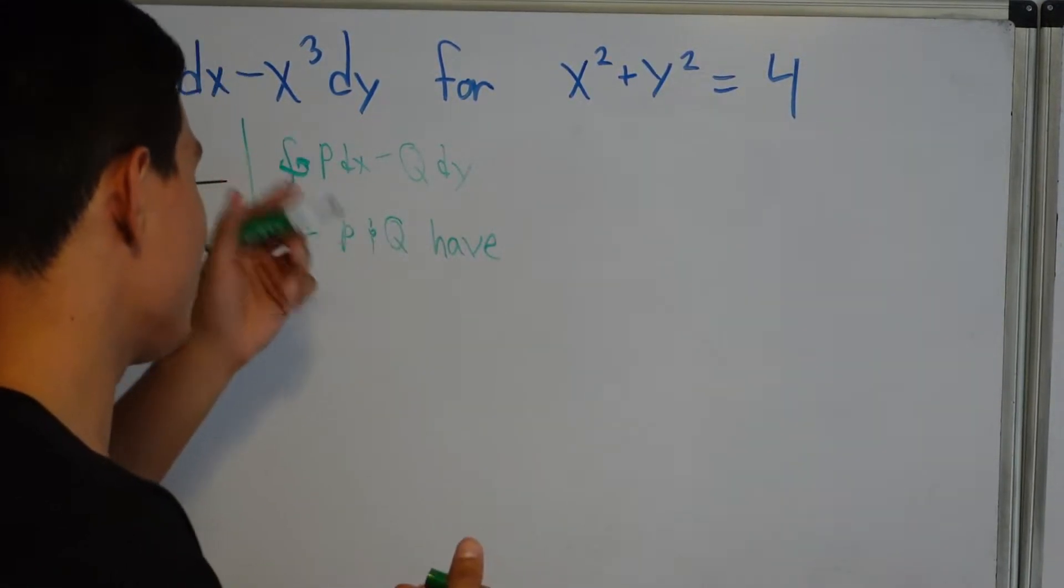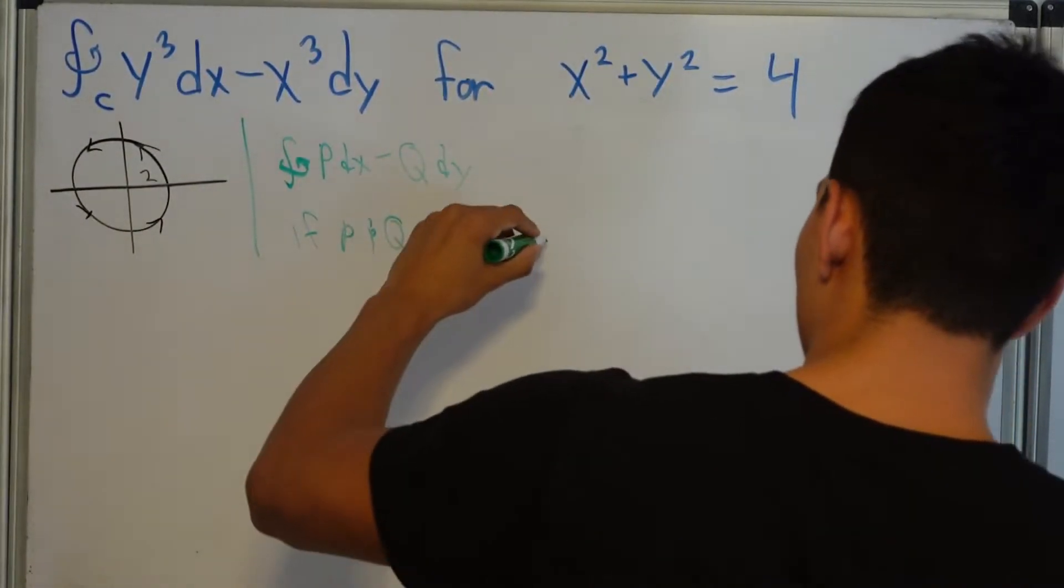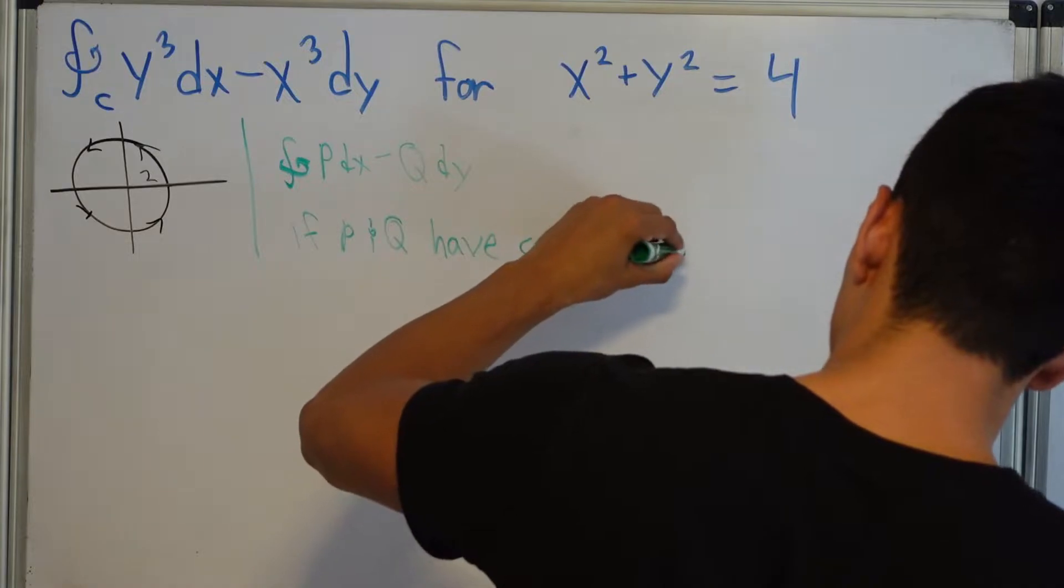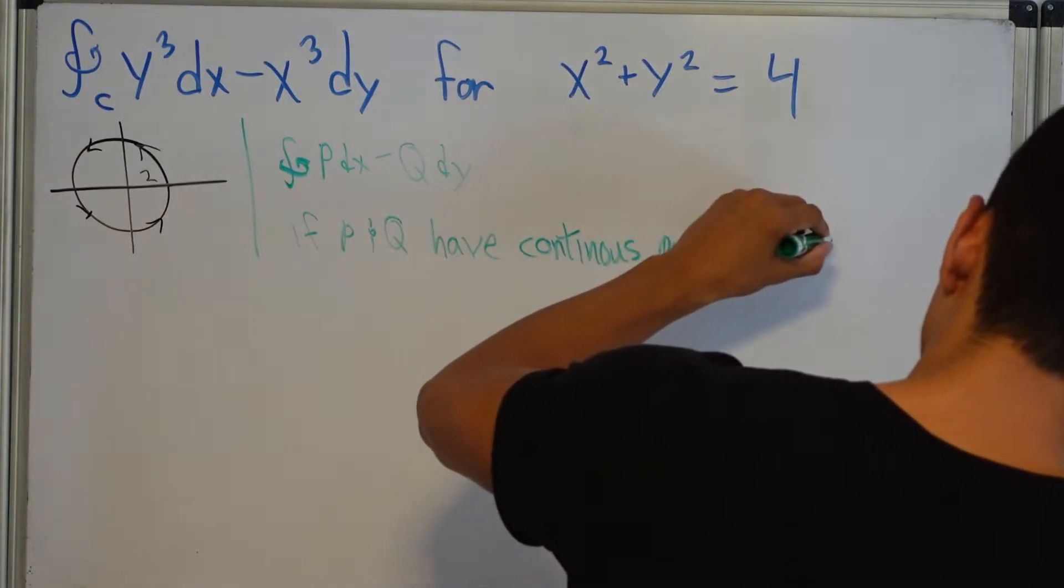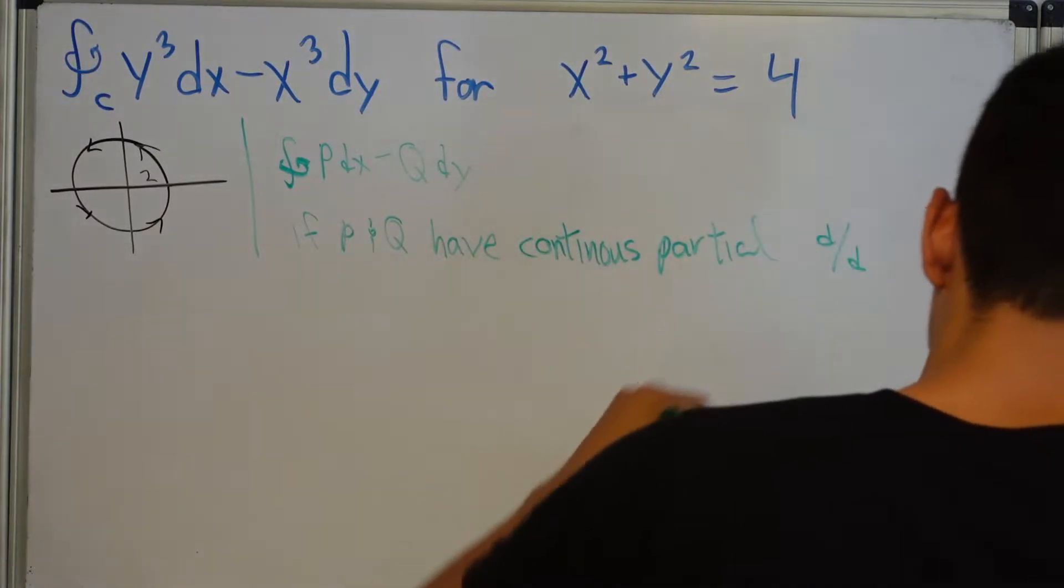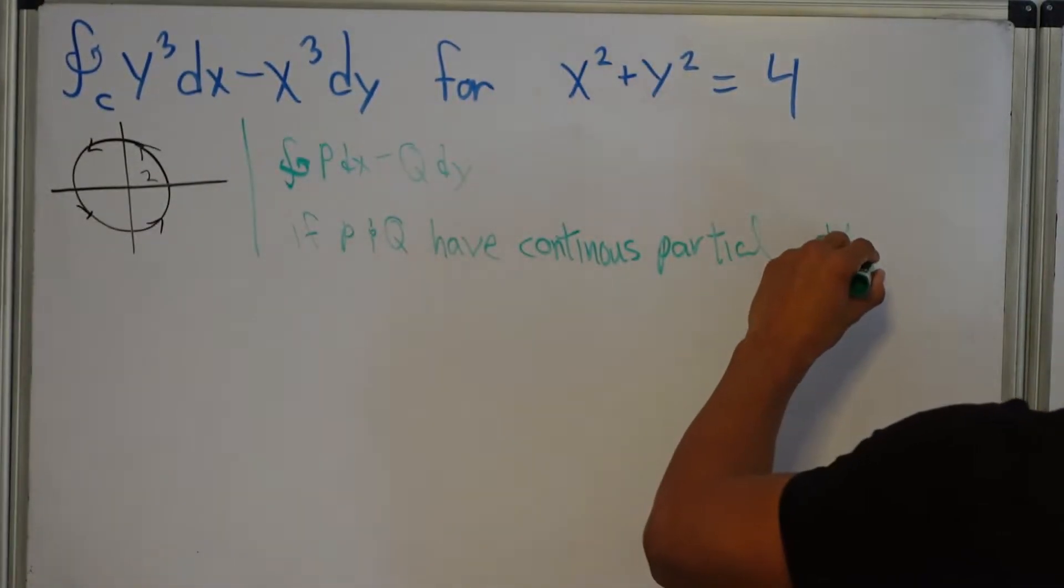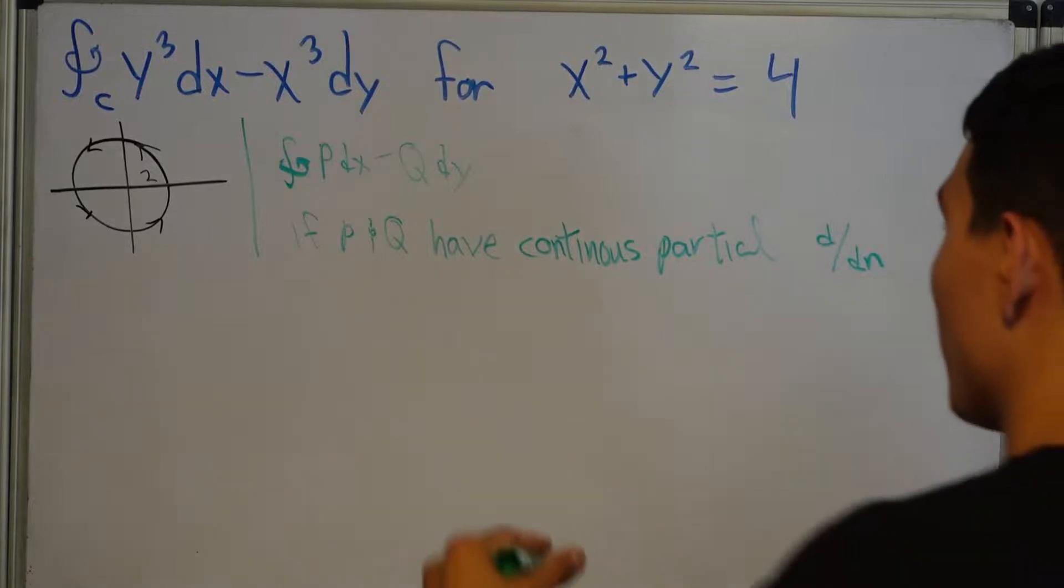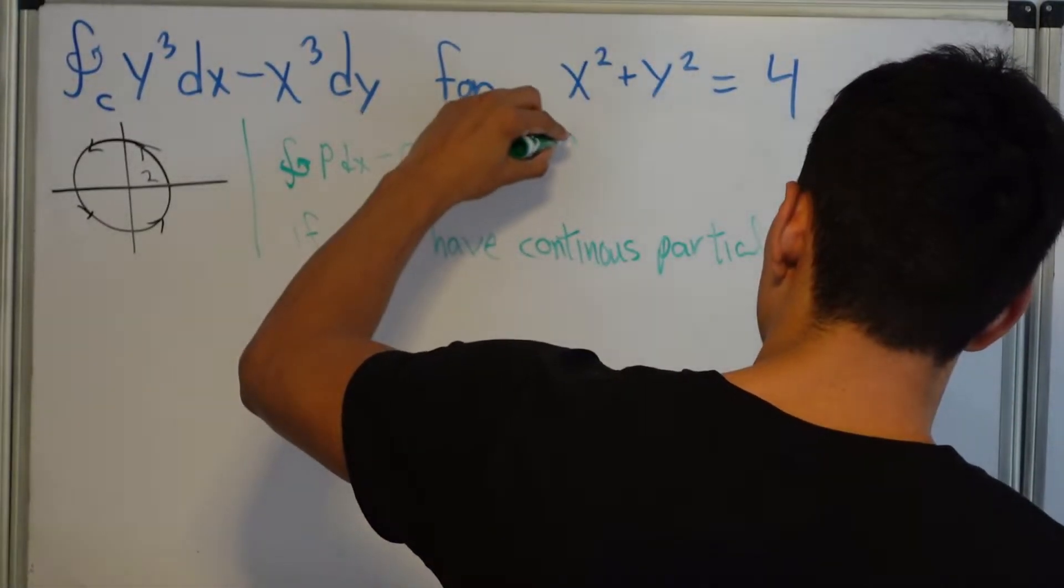Then we can use Green's Theorem. So if they have continuous partial, and I'll go D. Continuous partial derivative of whatever, right? Then we can use this fact.